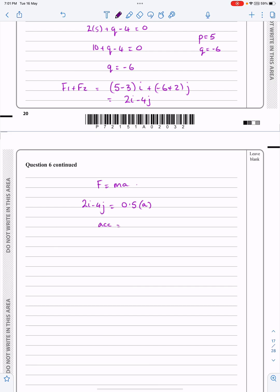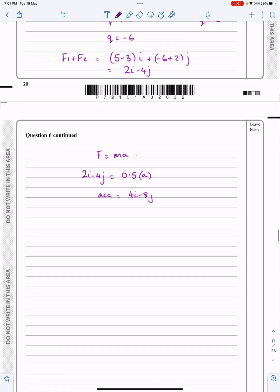So the acceleration works out to be 2 minus 4 divided by 0.5. Be careful. Dividing by a half is the same as doubling. So it's 4I minus 8J when I'm doing that. So we don't want to lose silly marks when we're going through this, tough, difficult enough as it is.